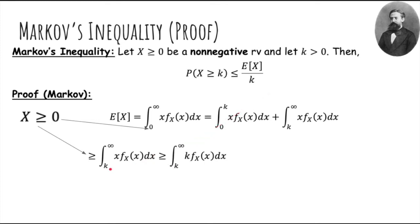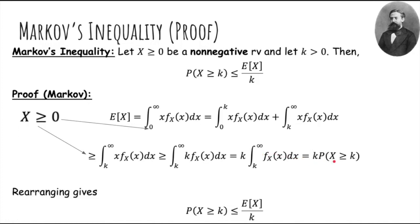Now the smallest value of x in the range from k to infinity is k. So if we replace x with k, that will only make things smaller since densities are non-negative. Then we pull out the k, and we have the integral from k to infinity of the density of x, which is just the probability that x is greater than or equal to k. Rearranging gives us Markov's inequality.